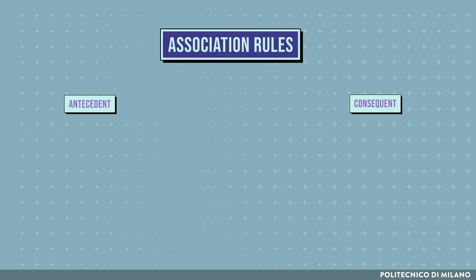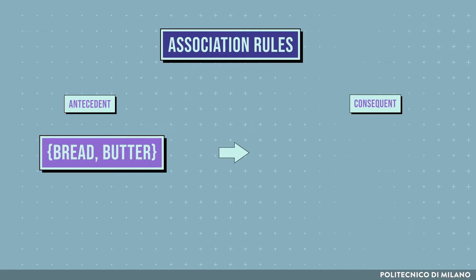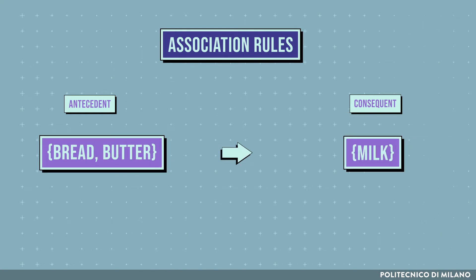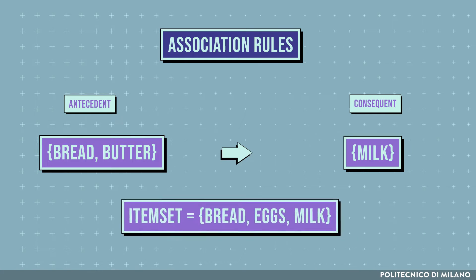For instance, considering the supermarket domain, a rule could be: if butter and bread are the antecedent and milk is the consequent, the rule means that in a basket containing butter and bread there is a high probability of finding milk too.